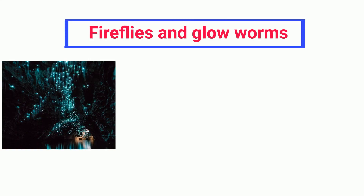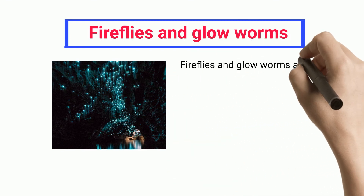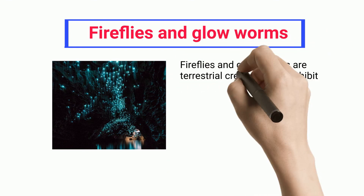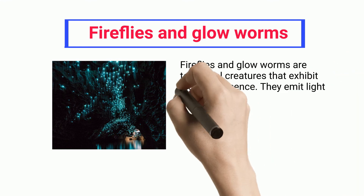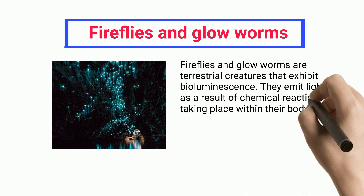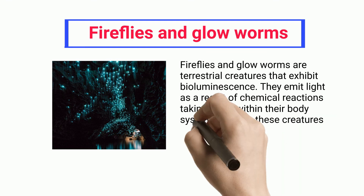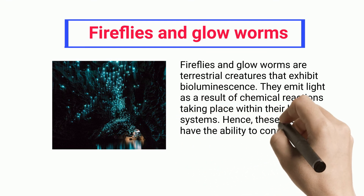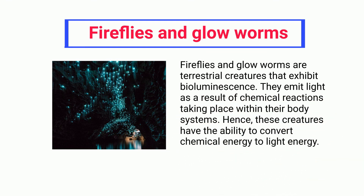Fireflies and Glowworms. Fireflies and glowworms are terrestrial creatures that exhibit bioluminescence. They emit light as a result of chemical reactions taking place within their body systems. Hence, these creatures have the ability to convert chemical energy to light energy.